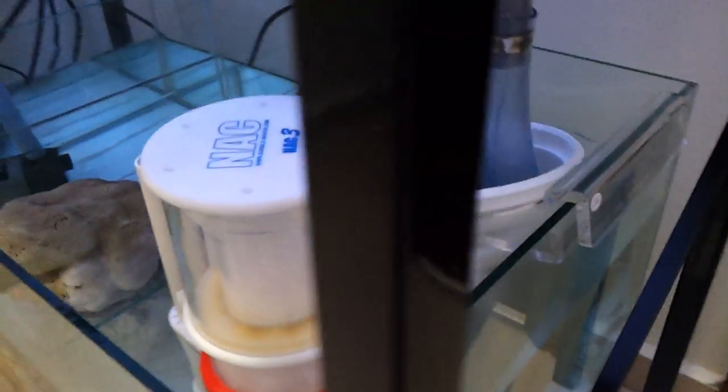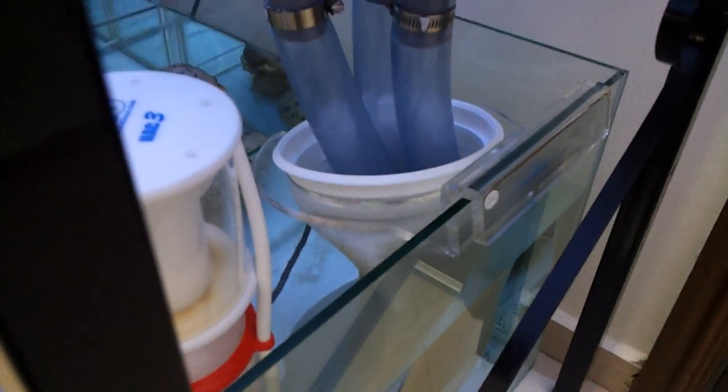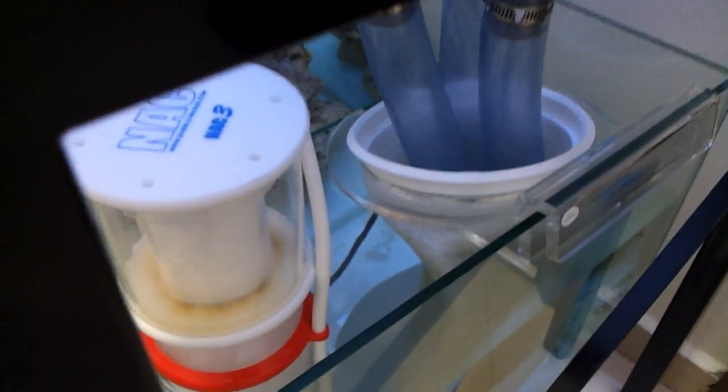So we have the three overflow pipes coming down to a seven-inch diameter sock net.